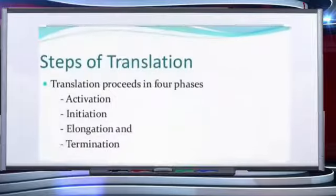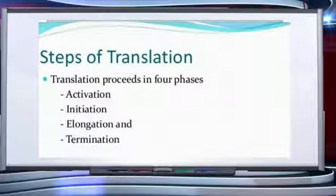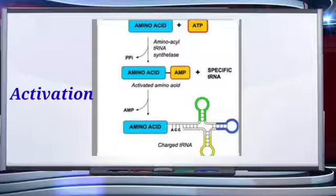This entire process occurs in the ribosomes, which are located in the cytoplasm and are cell organelles. The different phases of translation are: activation, initiation, elongation, and termination. The first step is activation of amino acids in the cytoplasm, for which ATP and the enzyme aminoacyl synthetase are required. The activated amino acid is produced along with AMP and a phosphate group.